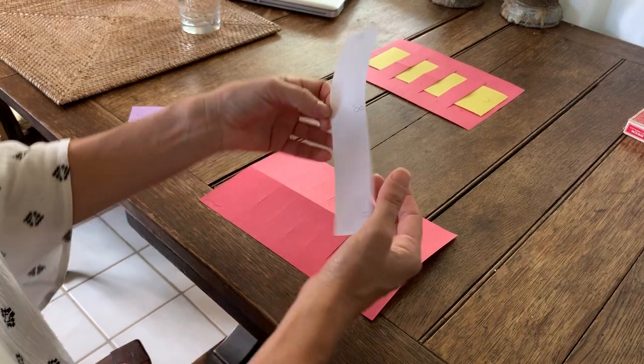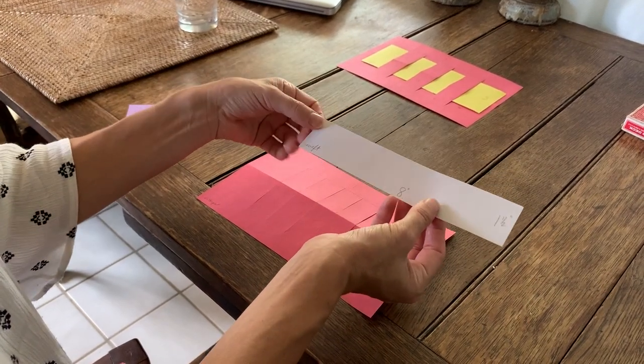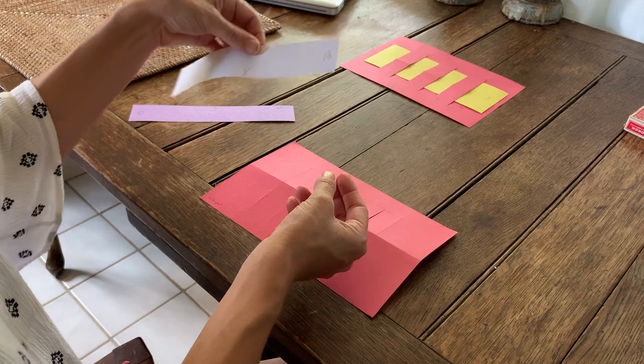Now these strips I have two. These are one and a half inches by eight. This is called the weft.